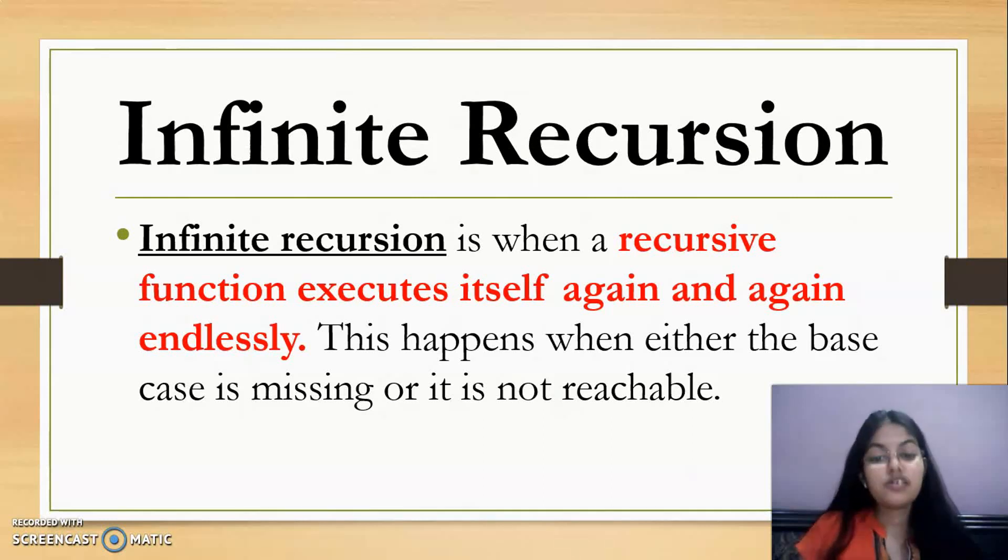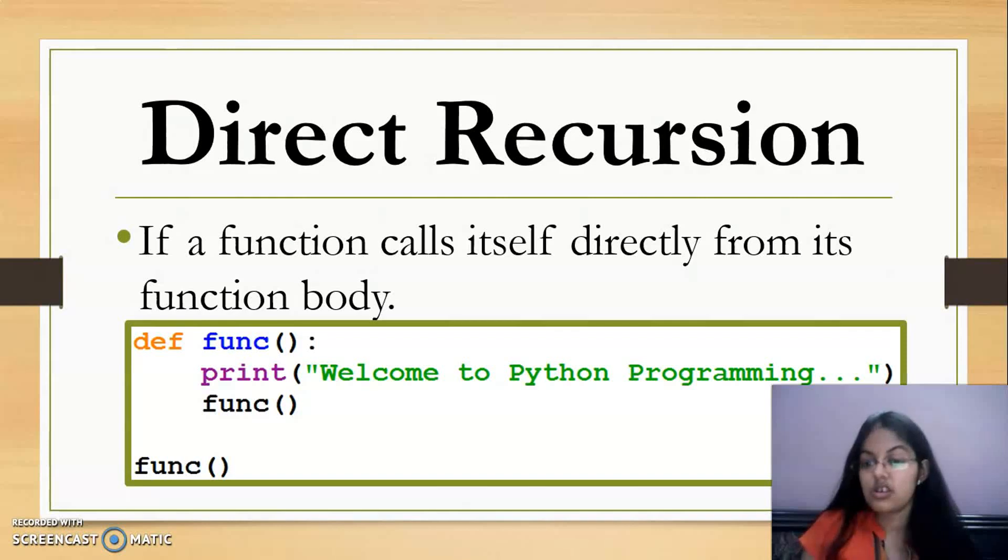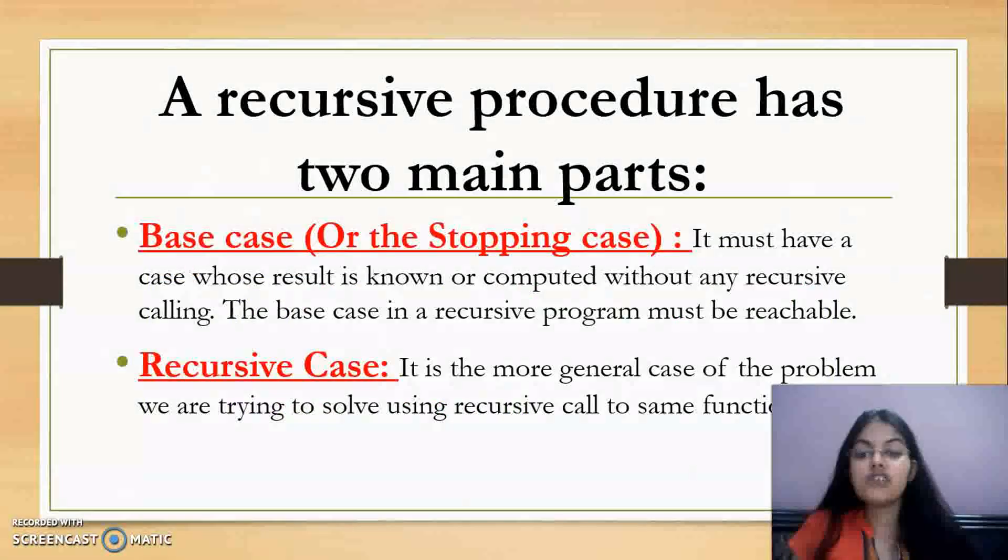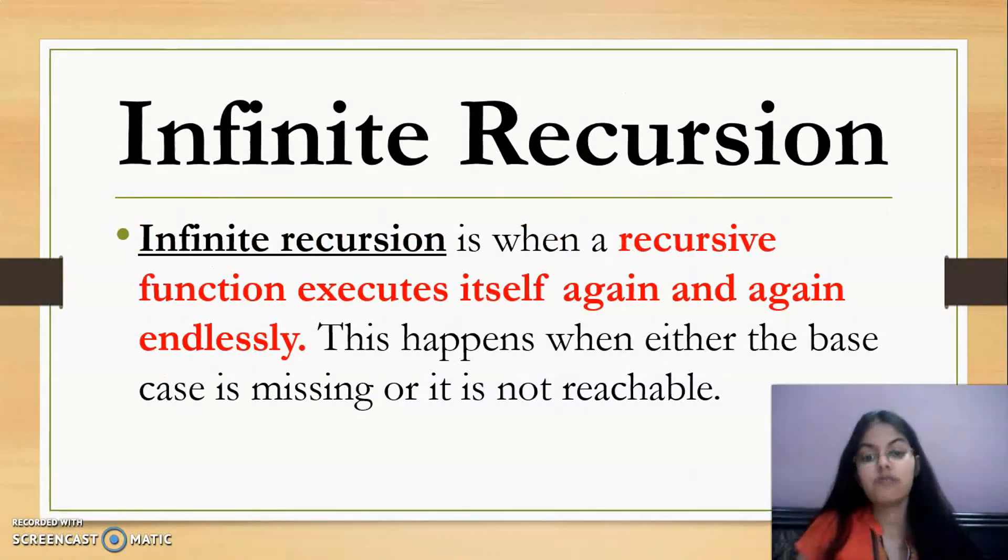What is infinite recursion? When a recursive function executes itself again and again endlessly. In the two programs we made for direct recursion and indirect recursion, we neither gave a base case nor a stopping value. That's why the message printed infinite times. That is infinite recursion. This happens when either the base case is missing or it is not reachable. When you don't have a base case or it's not reachable, that case will result in infinite recursion.